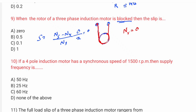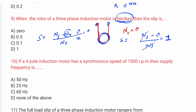When we block the rotor, we hold it tight so it cannot move. Then the slip s = (Ns − 0) / Ns = 1. When the rotor of a three-phase induction motor is blocked, the rotor speed is zero. So slip equals 1. Option D is the right answer.